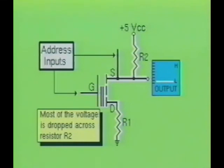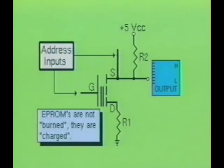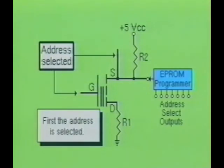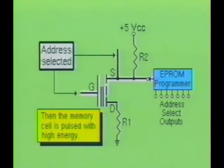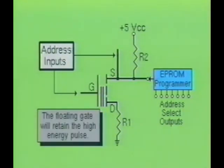Programming an EPROM is very similar to programming a standard PROM device, with this exception: the EPROM is not burned, it is charged. A special EPROM programmer is used to select the desired address to be programmed, then it places the desired binary information at the control gate of the device. The EPROM is then pulsed with a high-energy pulse, which locks the bit information into the substrate of the chip. The bit of information is stored in the floating gate, where it remains even after programming voltages are removed.